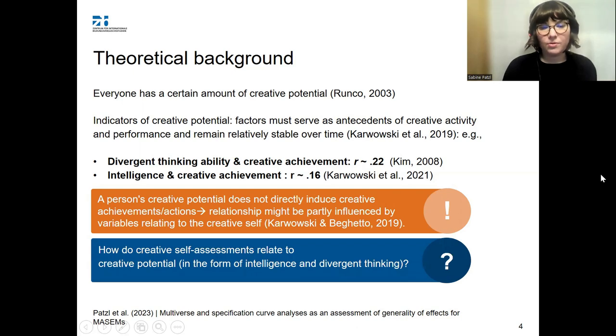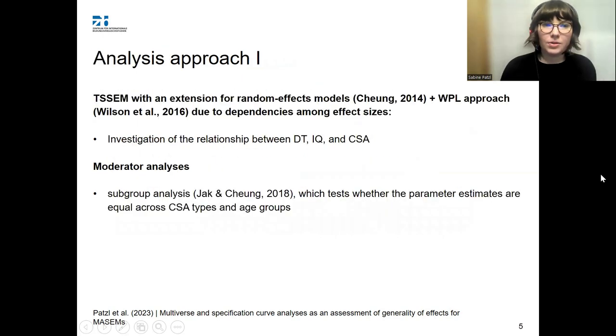This is why we chose to look at the relationship between creative self-assessment measures and two indicators of creative potential, being intelligence and divergent thinking. We use structural equation modeling, specifically TSSEM, with an extension for random effects models and the VPL approach as multiple studies reported more than one effect size. To test how robust our structural equation model is, we use subgroup analysis to test whether the parameters estimates are actually equal across CSA type, creative self-assessment types, and age groups.